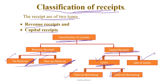Loans are of two types: internal and external. Next is sale of assets. If you have the loan amounts, it will be from the government. Government shares and gold are included.